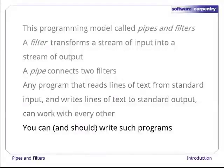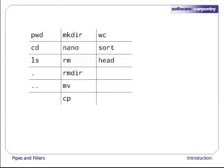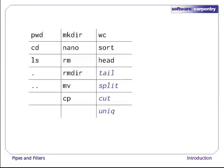You can, and should, write your programs this way so that you and other people can put those programs into pipes to multiply their power. To summarize, we now have a bunch of commands for moving around the file system, and three for working with text: wc to count things, sort to sort them, and head to select lines from the front of a file. After this episode is over, please go and explore a few other simple text processing commands, such as tail, split, cut, and unique. Remember, each tool you learn multiplies the power of the tools you already know.